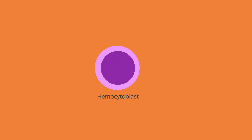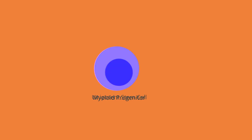A hemocytoblast becomes a myeloid progenitor, or multipotent stem cell, first. The progenitor then changes into a unipotent stem cell that gives rise to a proerythroblast.